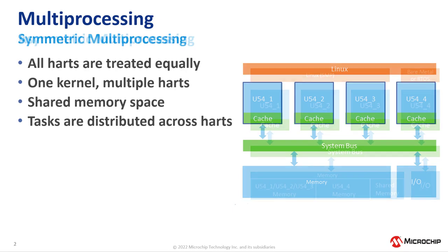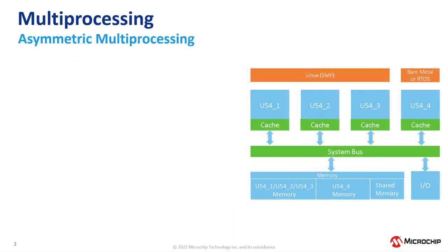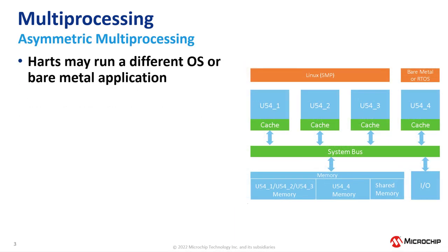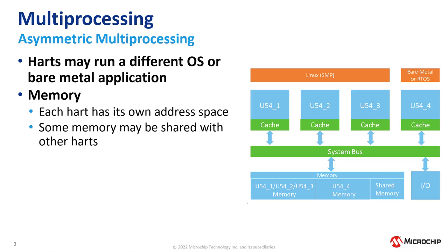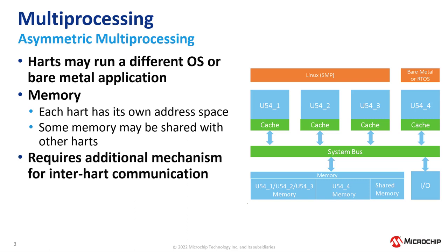In an Asymmetric Multiprocessing architecture, cores may run a different operating system or bare-metal applications. In terms of memory, each core has its own address space. There may also be some shared memory with other cores. This type of architecture requires an additional mechanism to achieve inter-core communication.